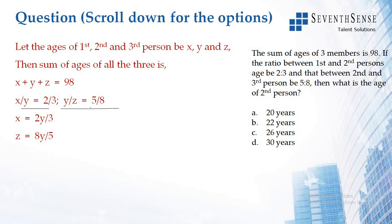Now substitute the value of x and z in the equation. You'll get 2y by 3 plus y plus 8y by 5 equals 98. Simplifying that, 49y by 15 equals 98.